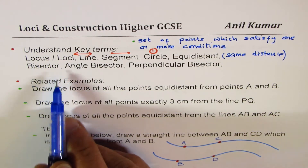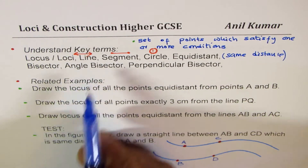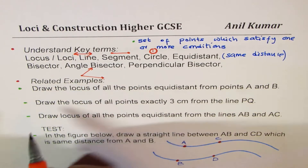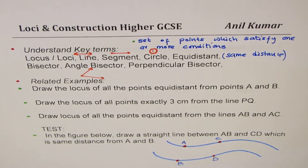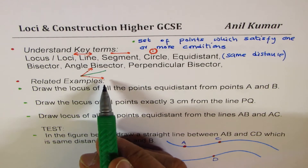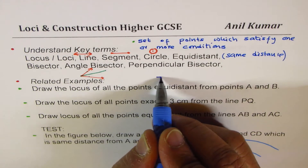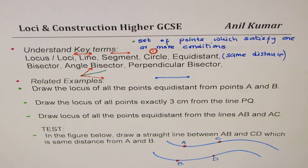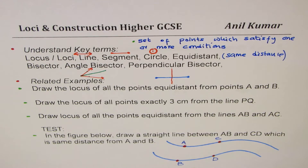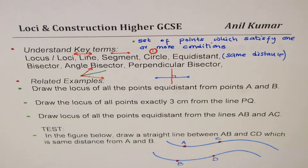Bisectors help us to get equidistant solutions. We could have angle bisectors or perpendicular bisectors. For angle bisectors, we have two rays or segments at an angle, and we find points which are the same distance away from those two rays or segments — that becomes the angle bisector. Perpendicular bisectors are used mainly when talking about a segment: we bisect the segment with a line through its center that is also perpendicular to the segment.